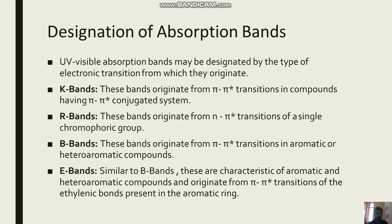Then R-Band: these bands originate from n-Pi* transitions of a single chromophore group. And in the case of B-Band, these bands originate from Pi-Pi* transitions in aromatic or heteroaromatic compounds.